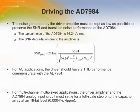Although the AD7984 is easy to drive, the driver amplifier must meet the following requirements. First, the noise generated by the driver amplifier must be kept as low as possible to preserve the signal-to-noise ratio and transition noise performance of the AD7984. The noise from the driver is filtered by the AD7984's analog input circuits — a one-pole low-pass filter made by RN and CN — or by an external filter. For AC applications, the driver should have a total harmonic distortion performance commensurate with the AD7984.